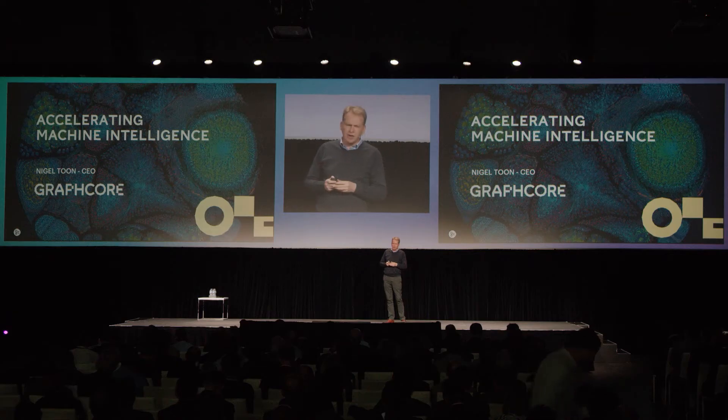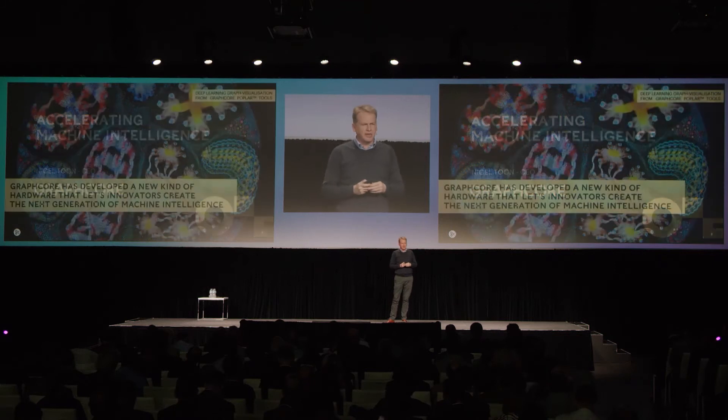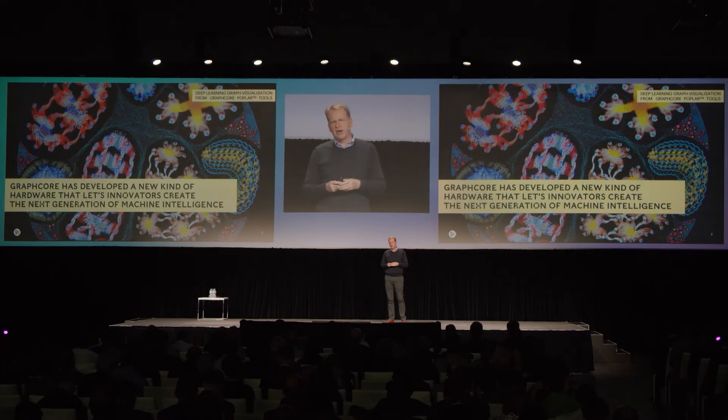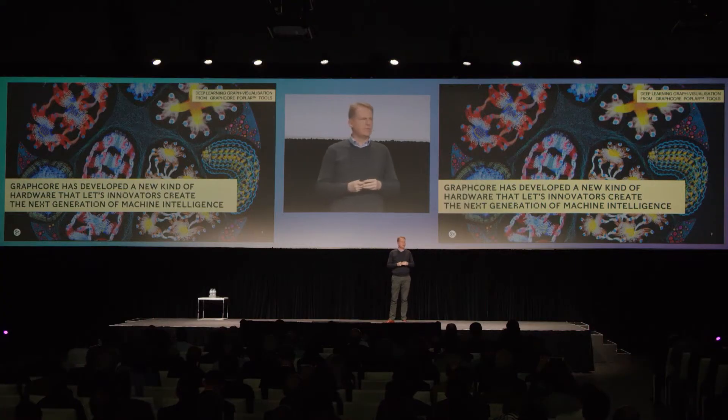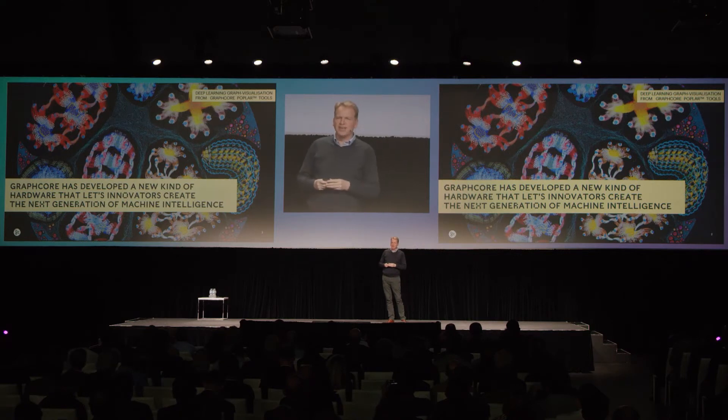Just to talk a little bit first about Graphcore and who we are. Some of the images you're going to see inside my slides are created by the software that goes together with the process of building what we call an IPU — another term for the lexicon — an Intelligence Processing Unit, which really creates this new wave for supporting machine intelligence.